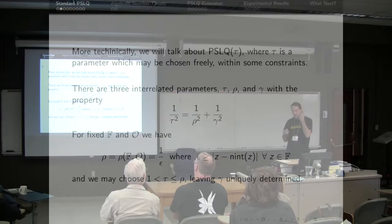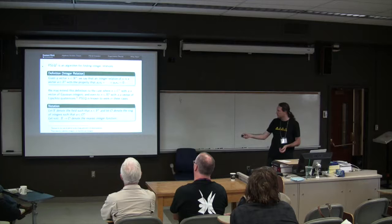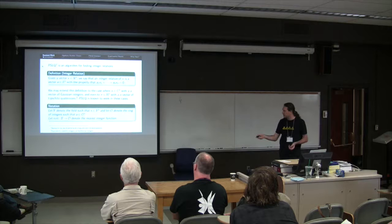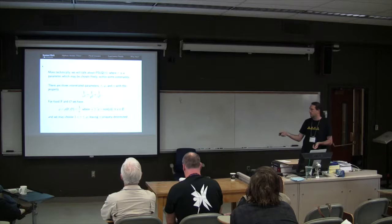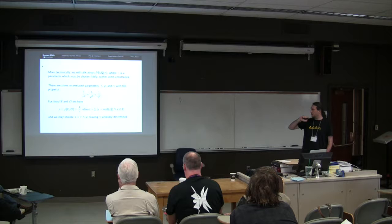we can set rho to be one on epsilon, where epsilon is some bound of the distance between an element of the field and its nearest integer. I am denoting by nit the nearest integer. So if we can bound the distance between an element of the field and its nearest integer, then we can set rho to be the inverse of that bound. And rho is set. We can freely pick tau between one and rho, and gamma remains uniquely determined.